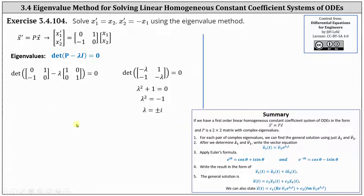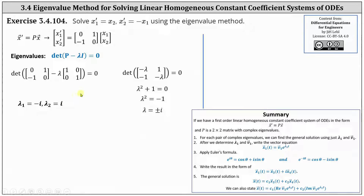Going back to our work, we know lambda sub one equals negative i and lambda sub two equals i. We can determine the general solution using either eigenvalue, but we'll stick with lambda sub one, which means we now need to find a corresponding eigenvector for lambda sub one equals negative i.